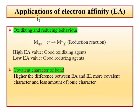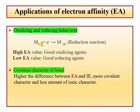Now we will see the applications of electron affinity. If we know the electron affinity values, the main application is determining the oxidizing or reducing behavior of an element. When an element participates in a reduction reaction, it acts as an oxidizing agent. So high electron affinity means the element is a good oxidizing agent, and low electron affinity means the element is a good reducing agent.